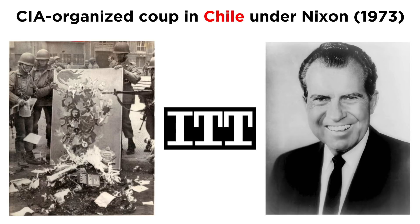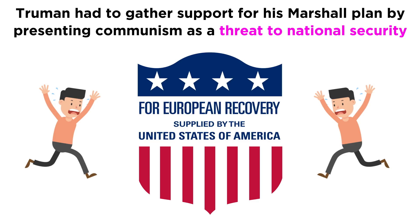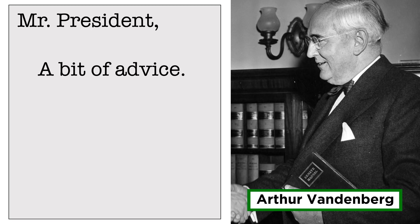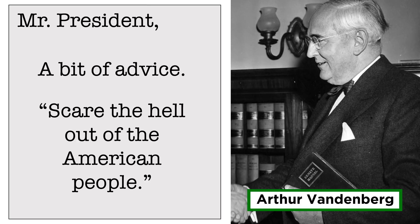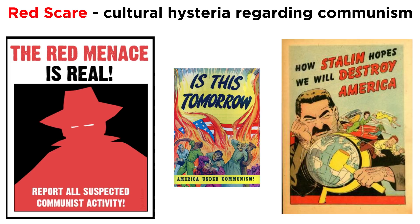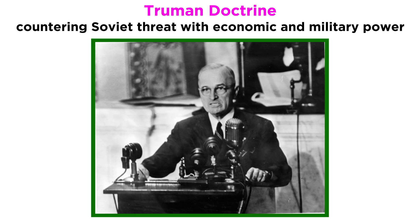In drumming up support for his ambitious Marshall Plan to rebuild war-devastated Europe, Truman may have unintentionally caused some of the anti-communist paranoia. Many Republicans were opposed to the massive multi-billion dollar package, and in order to win their support, Truman had to present the program as a form of national security, a barricade against the Soviet menace. Senator Arthur Vandenberg even told Truman to demagogue on this issue, saying, "Scare the hell out of the American people." His plan worked, but inadvertently unleashed a red scare, a cultural hysteria that communists were lurking everywhere. The Marshall Plan was one product of what came to be codified as the Truman Doctrine — the idea of aggressively countering Soviet threat with economic and even military power if necessary. This dominated American foreign policy until the collapse of the USSR in the 90s.